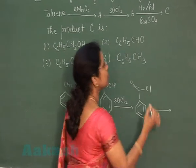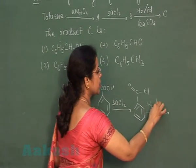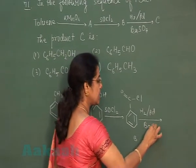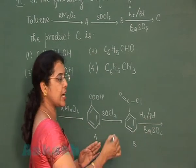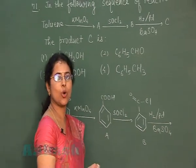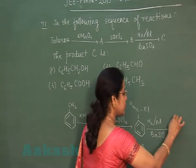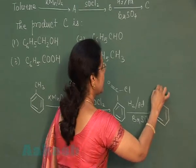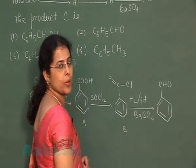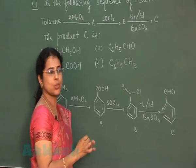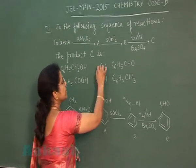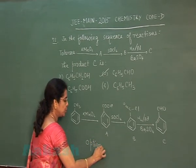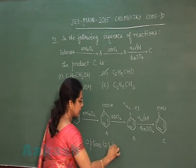Benzoyl chloride upon reduction with hydrogen in the presence of palladium and barium sulfate — this reaction is a named reaction called Rosenmund reduction. By Rosenmund reduction, benzoyl chloride is converted to benzaldehyde. This is product C. So the correct option is option 2.